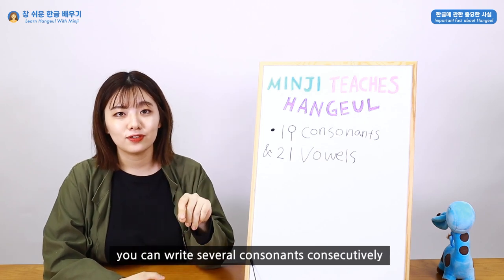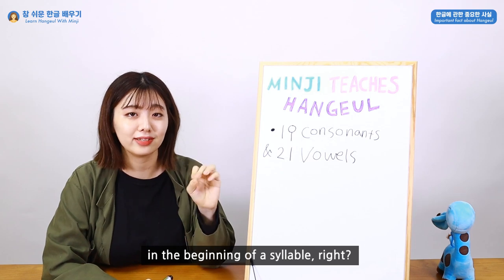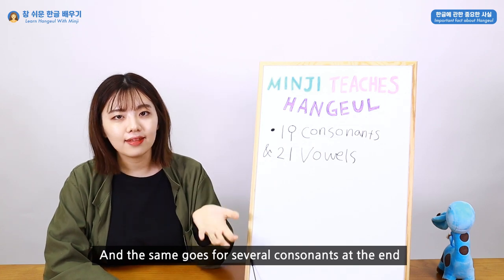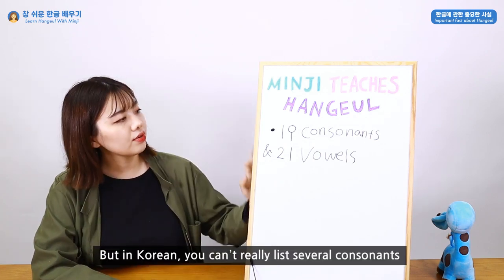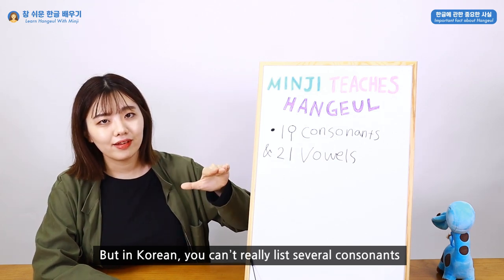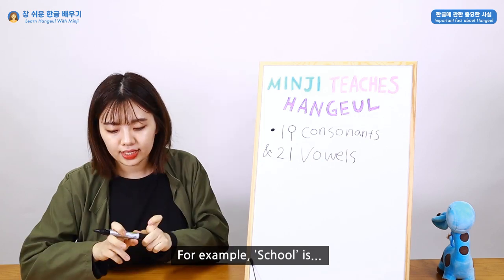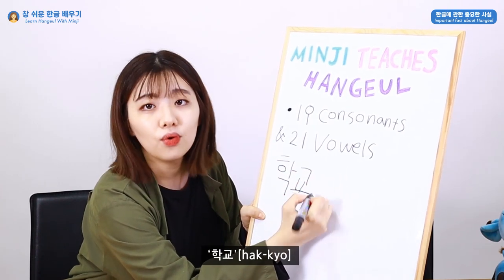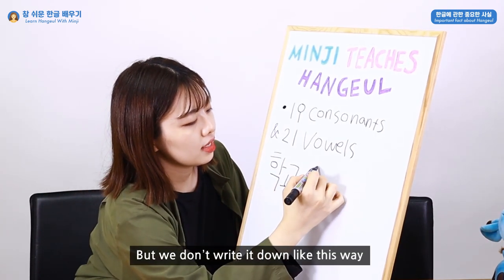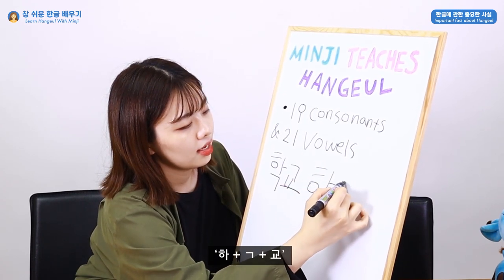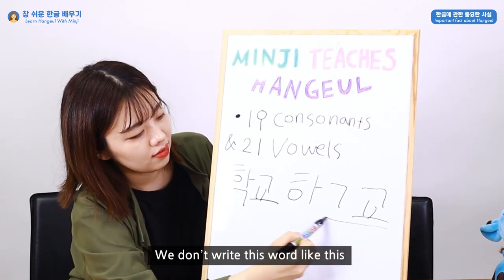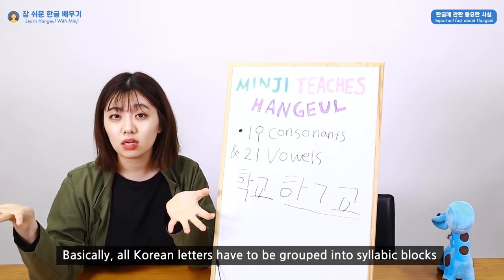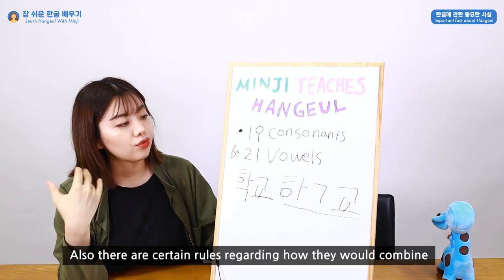For example, in English you can write several consonants consecutively at the start of a syllable, as in 'school' or 'size,' and the same goes for several consonants at the end, as in 'creeps.' But in Korean, you cannot really list several consonants at the start or end of a syllable. For example, school is 학교 in Korean. All Korean letters have to be grouped into syllabic blocks, and there are certain rules about how they combine, so we need to follow them.